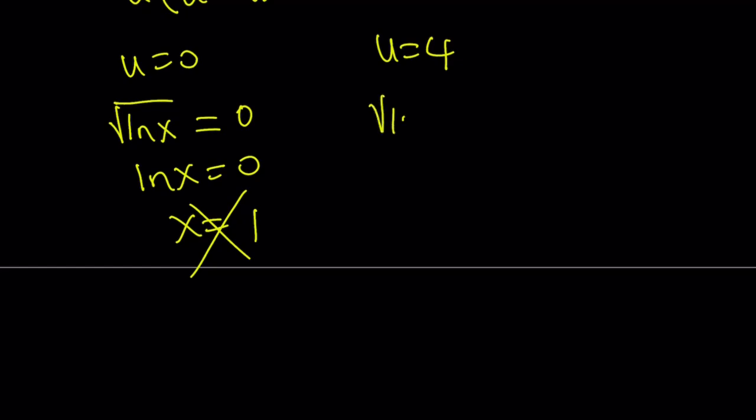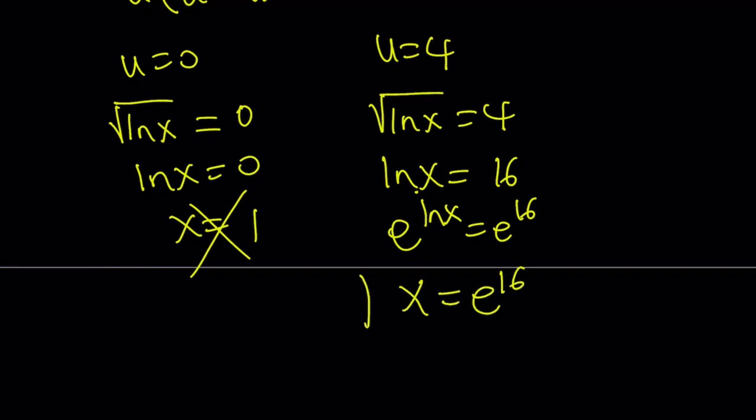If u is equal to 4, square root of ln x equals 4. And then square both sides, ln x is equal to 16. And by using the definition or by doing e to the power of both sides, we get e to the power ln x equals e to the power of 16, which means x equals e to the power of 16 as the only solution to this equation. And if you plug it in, you're going to see that it works, it's valid, and all good.